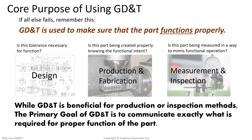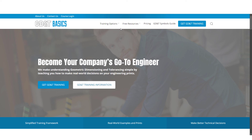Remember, the core purpose of using GD&T is to make sure that the part functions properly. This is carried out in design, production, fabrication, measurement, and inspection. If you design using GD&T with the part's functionality in mind, then the part will be produced and inspected in the same manner. GD&T will communicate exactly what is important for the part to function — no more, no less.